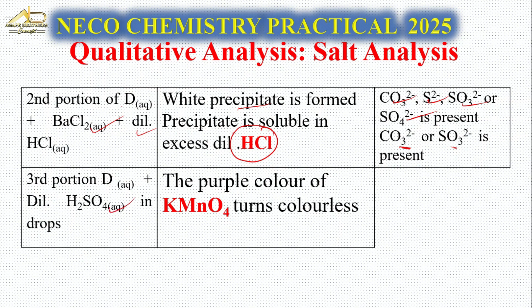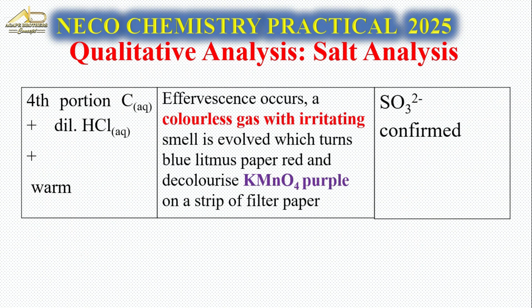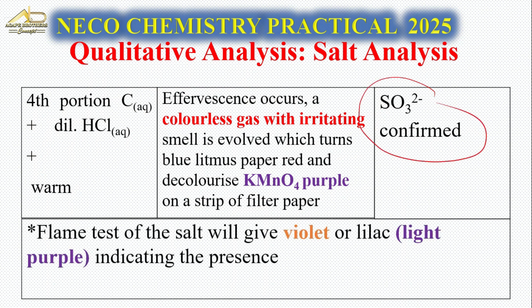To confirm SO₃²⁻: add a portion to KMnO₄ - the purple color turns colorless, showing SO₃²⁻ is present. Add another portion with dilute HCl: a colorless gas with irritating smell evolves, which turns blue litmus paper red and decolorizes purple KMnO₄. This confirms SO₃²⁻. The flame test of salt D gives a violet or lilac color, indicating the presence of potassium, K⁺.